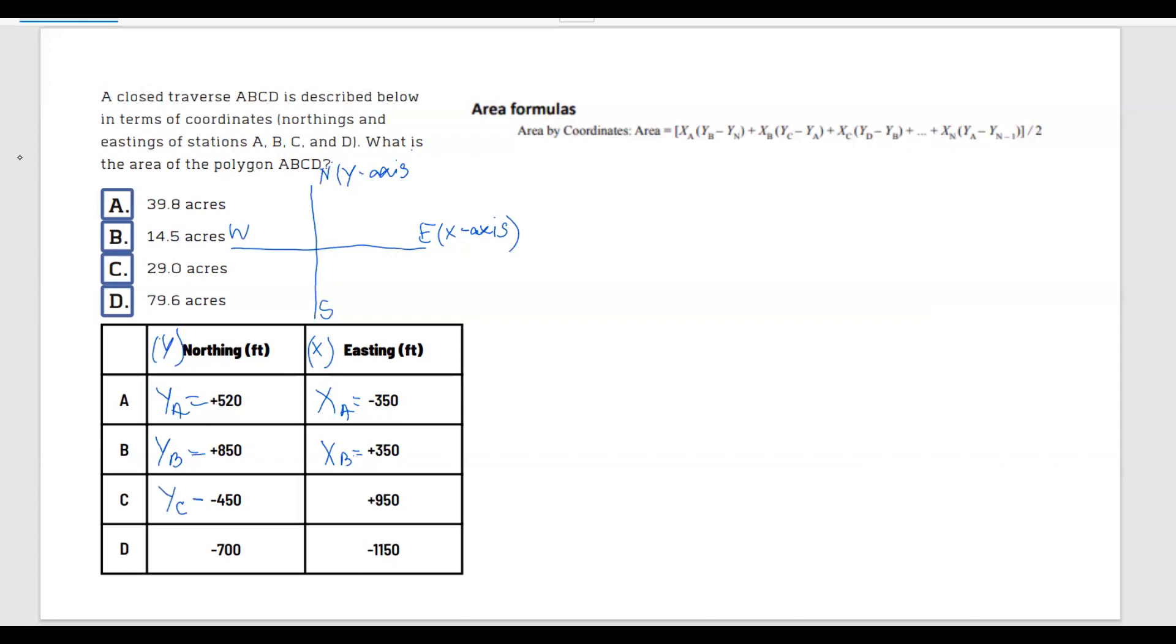So when I have northing of point A is 520, that means yA equals 520. And then easting of point A is -350, which means xA equals that. Now yB, xB, yC, xC, yD, and xD.